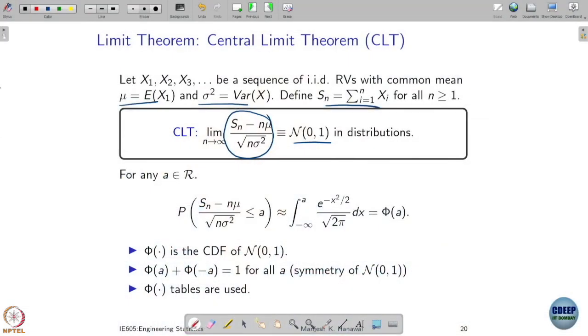As we will go later, you will see more usefulness of this, but I will just highlight a few of its uses. One thing is suppose you take some real number a and want to compute what is the probability that S_n minus n mu divided by square root of n sigma squared is less than or equal to a. Here mu is the mean of the random variables, the common mean.